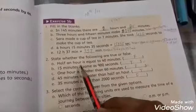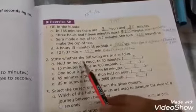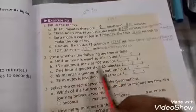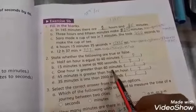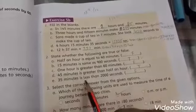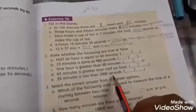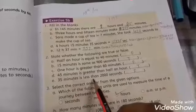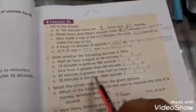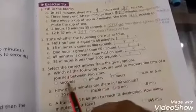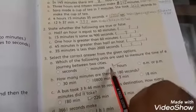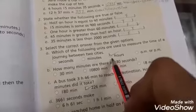Question 2: State whether the following are true or false. Half an hour equals 40 minutes - false, it's 30 minutes. 15 minutes equals 900 seconds - true. One hour is greater than 60 minutes - false. 45 minutes is greater than half an hour - true. 35 minutes is less than 2000 seconds - false. You need to convert 35 minutes to seconds to check.